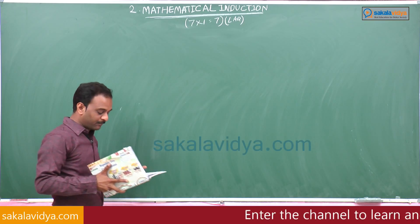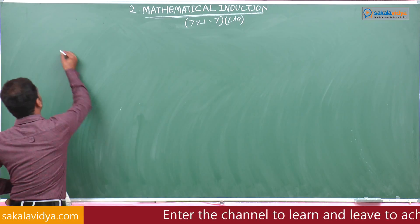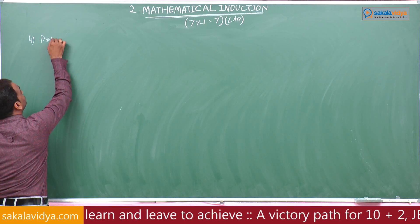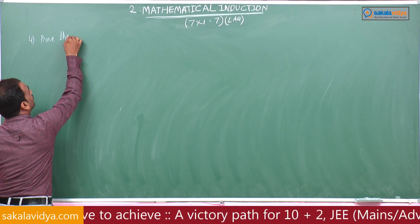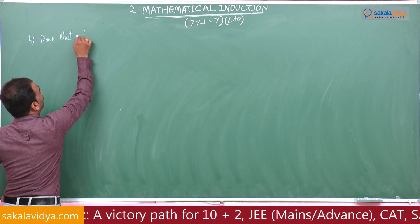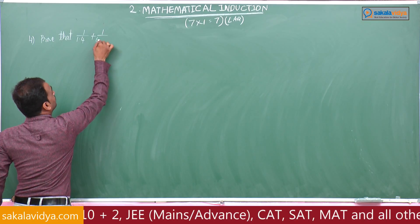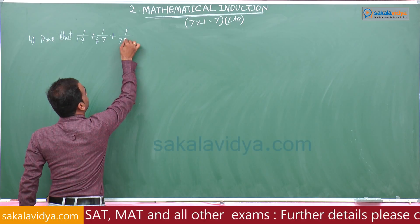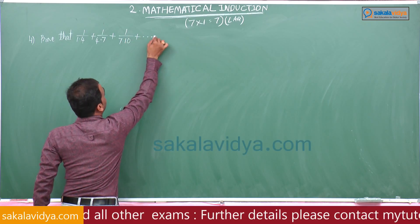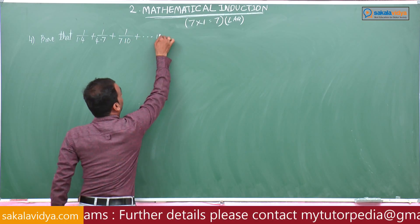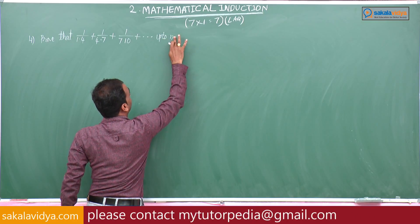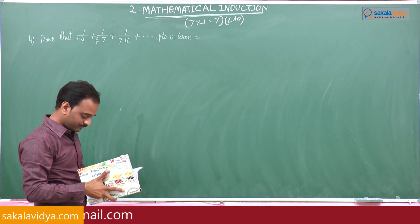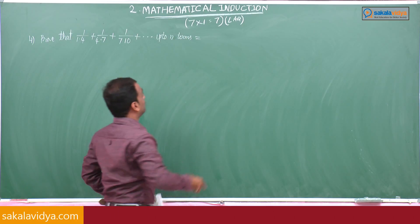Next problem: prove that 1/(1×4) + 1/(4×7) + 1/(7×10) + ... up to n terms is equals to n/(3n+1).